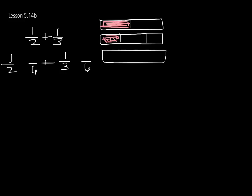Now, what did I do to two to get to six? Well, I times it by three. Whatever I do on one side, I'm going to do to the other, so it's three. And now I can get rid of this because I've converted it to a new language — I've translated it, so to speak.